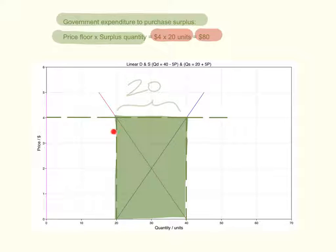The government expenditure is represented by this rectangle shaded in green.